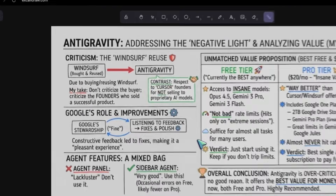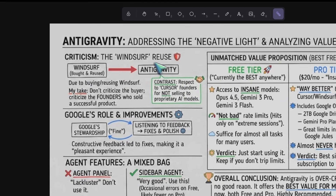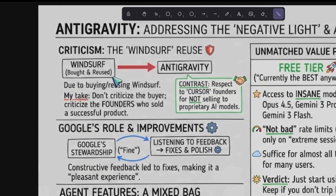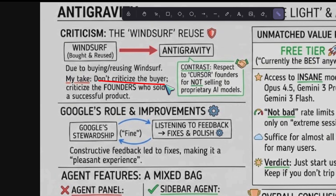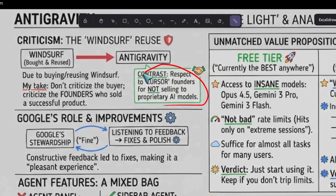I have been seeing a lot of negative light about anti-gravity on the internet. This was due to the fact that they bought Windsurf and basically reused that. I think that's not an issue, because if you want to criticize for that, then you should criticize the founders who sold it, even when it was quite successful. I say whatever I can about Cursor, but I respect their founders that they have at least not sold their most loved editor to some AI model company, which will limit it to proprietary models.